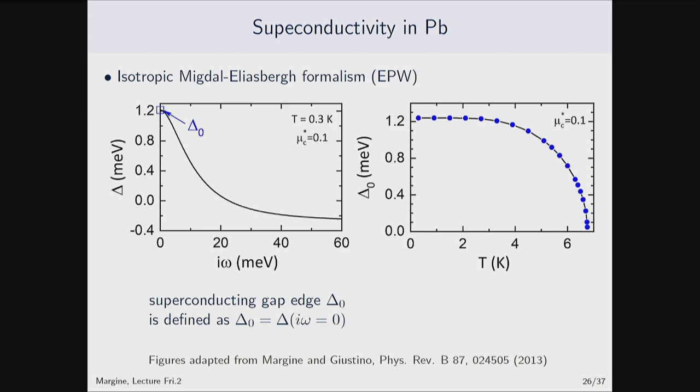In practice, we cannot do T equal to zero, so we go as close to zero as possible. You can see that you always get this kind of flat behavior, so we can extrapolate to zero temperature. The point where the gap vanishes defines the critical temperature Tc. Tc is defined as the temperature at which delta-naught is going to be equal to zero.